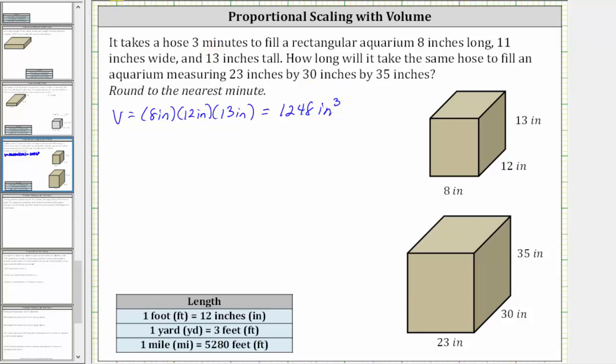And now we can express the flow rate of the hose, or the rate at which the aquarium is being filled. We can express the rate two ways. One way to express the rate is three minutes per 1,248 cubic inches, or we can say the rate is 1,248 cubic inches per three minutes.